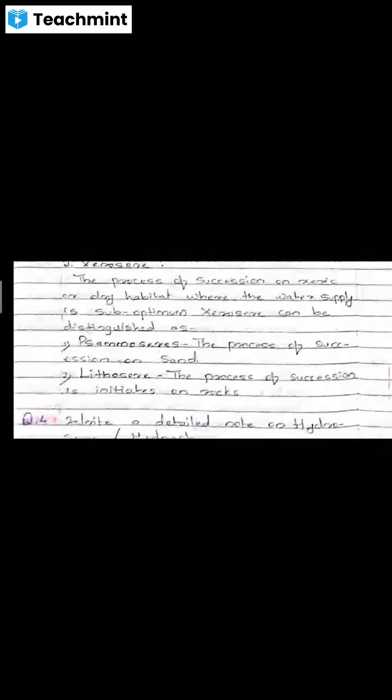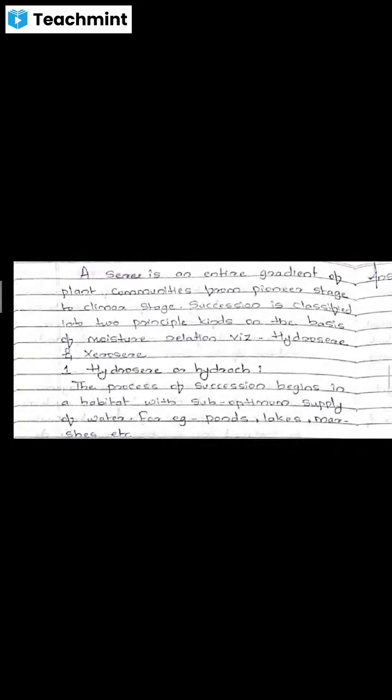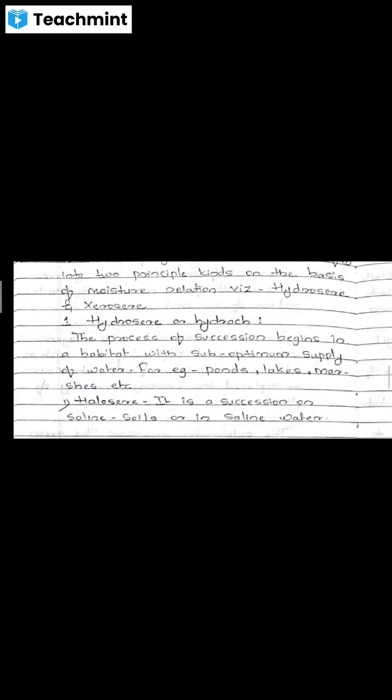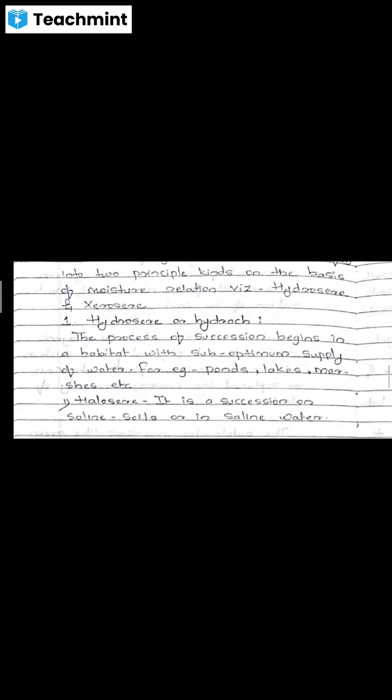The types of plant succession are hydrotropicand xerophytic succession. On the basis of habitat, the development of community from pioneer stage to climax stage is differentiated as hydrosere or xerosere. Hydrosere means plant succession that starts in a water habitat such as a pond, lake, or marshy places. If plant succession starts in saline soil or saline water, that is another form.